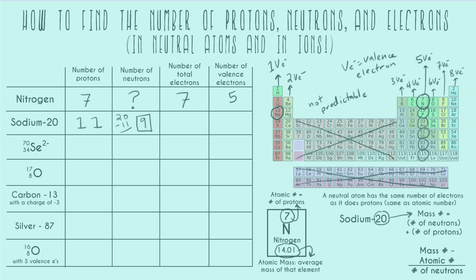To find the number of total electrons, we weren't given any information about the charge, so we assume it's neutral. That means it has the same number of electrons as protons — 11. And for the number of valence electrons, sodium is in our first column, so everything in that column has only one valence electron.